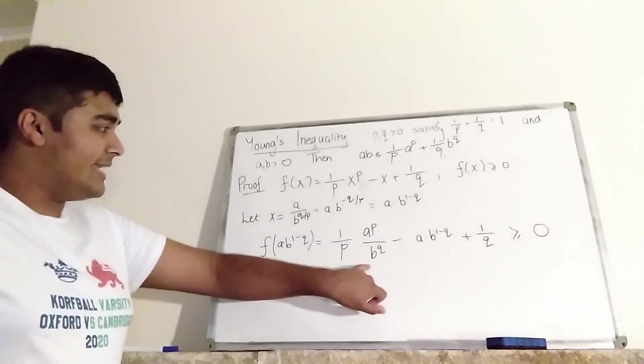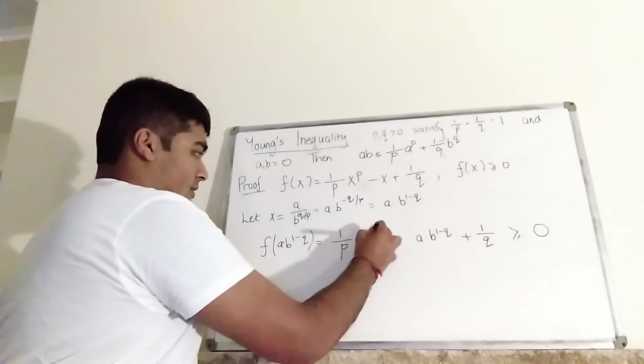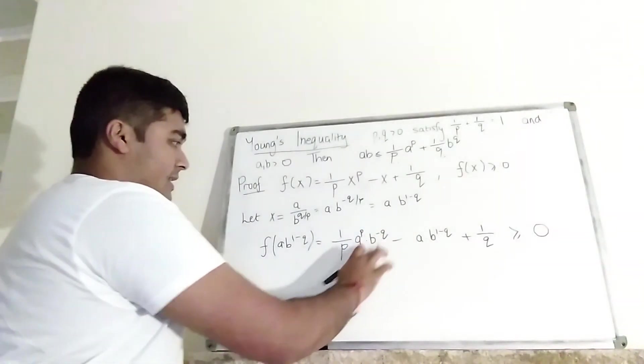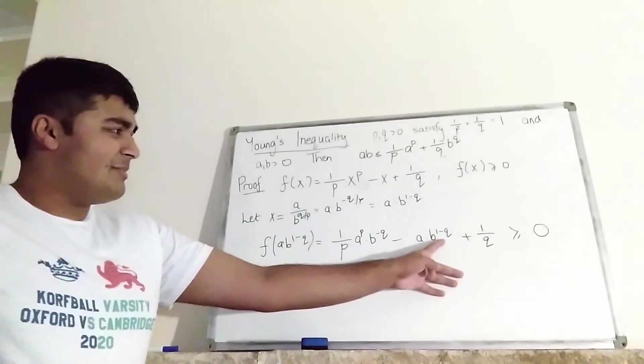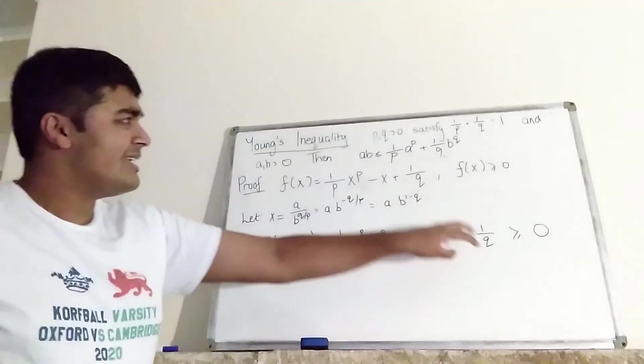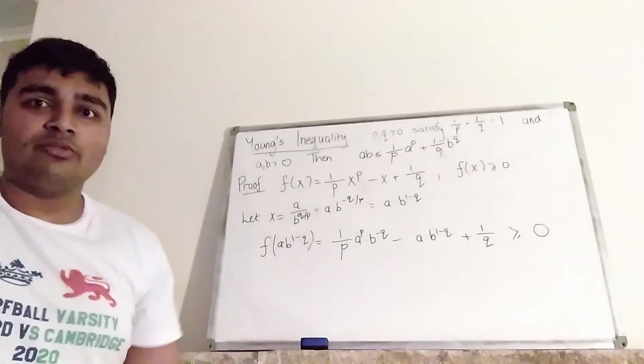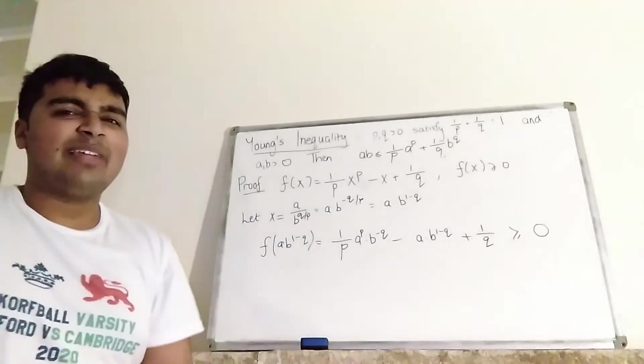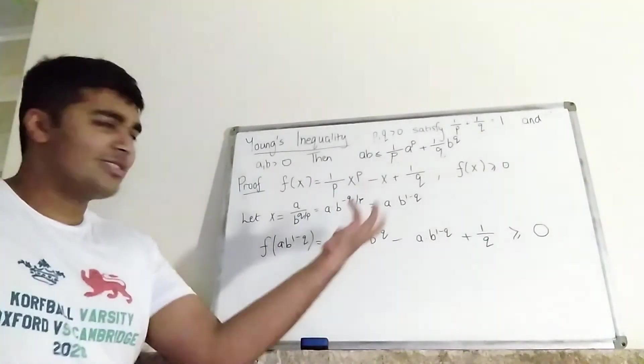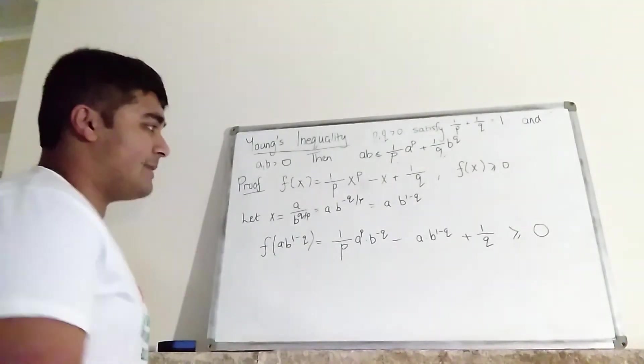OK, now this thing here is A to the P times B to the minus Q. Like so. And we've got B to the minus Q there. So it makes sense to try and multiply through by B to the Q. And then you can see there we're going to get B to the Q divided by 1 over Q, which is sort of what we want. Remember, we're working towards this thing here. So that helps in sort of choosing what to multiply through by and stuff like that. OK, so let's multiply through by B to the Q.